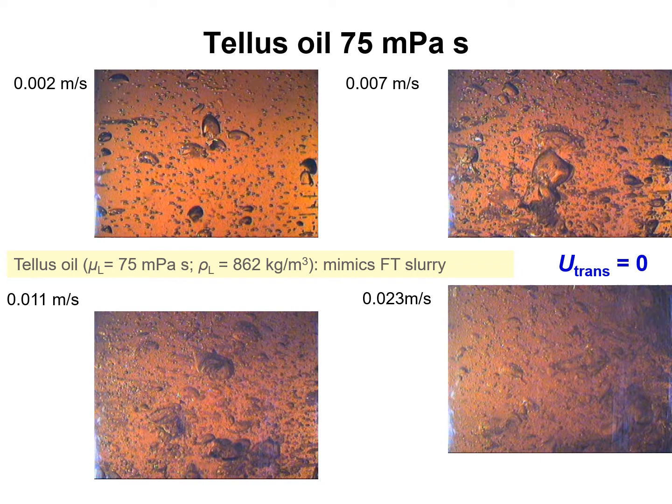You can try this experiment at home by bubbling air through corn syrup or maple syrup, and you will immediately notice that we have heterogeneous flow regime even at very, very low superficial gas velocities. So there is a huge difference between the hydrodynamics of a bubble column containing tetradecane — a low viscosity liquid — and tallus oil, which has high viscosity.